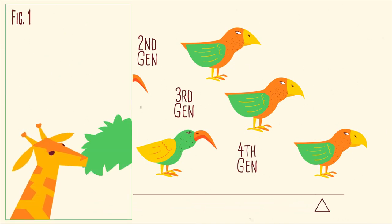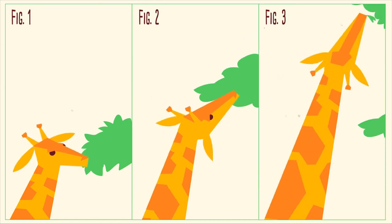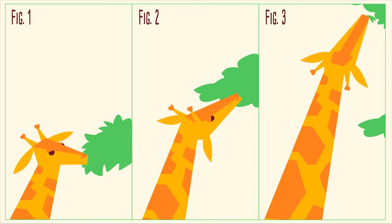In the case of the giraffe neck, natural selection would continually favor giraffes with longer necks, so that over time the average neck length in the population would gradually increase.